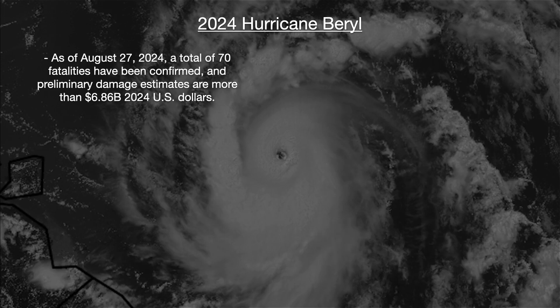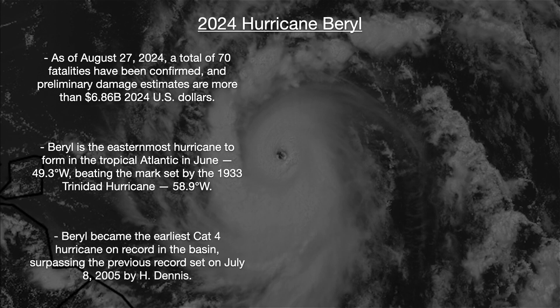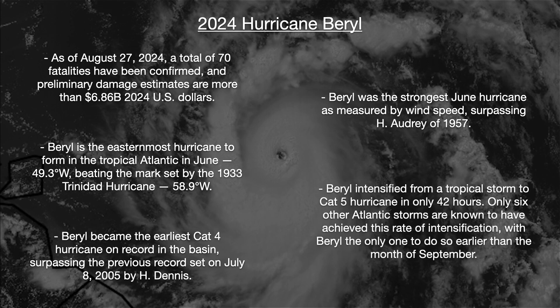As of August 27, 2024, a total of 70 fatalities were confirmed, and preliminary damage estimates exceeded $6.86 billion (2024 U.S. dollars). Beryl is the easternmost hurricane to form in the tropical Atlantic in June, beating the mark set by the 1933 Trinidad hurricane. Beryl became the earliest Category 4 hurricane on record in the basin, surpassing the previous record set on July 8, 2005 by Hurricane Dennis. Beryl was the strongest June hurricane by wind speed, surpassing Hurricane Audrey of 1957. Beryl intensified from a tropical storm to a Category 5 hurricane in only 42 hours — only six other Atlantic storms are known to have achieved this rate of intensification, with Beryl the only one to do so earlier than September.